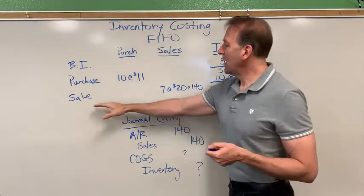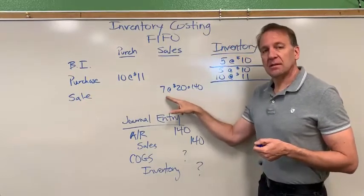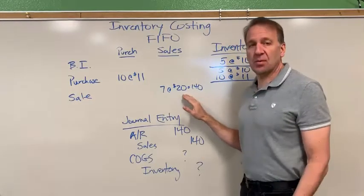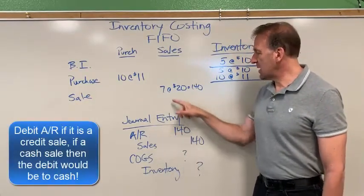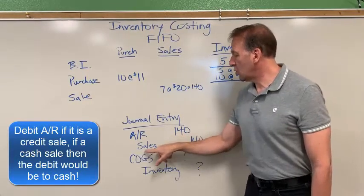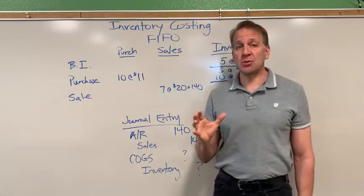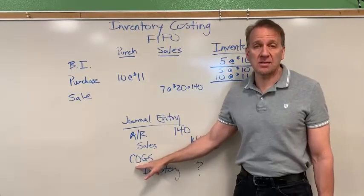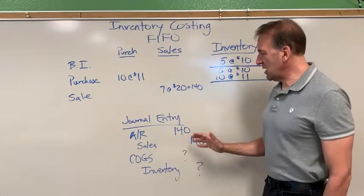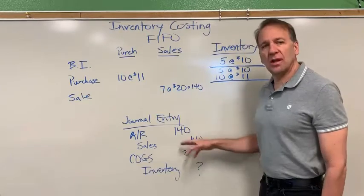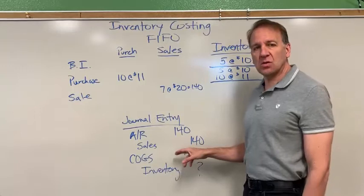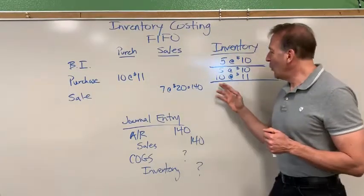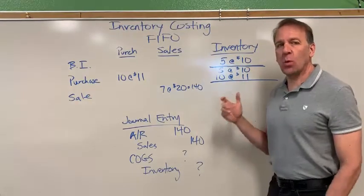Now I'm selling seven, and my sales price is $20. Recalling from journal entries we've done in the past, when we have a sale of a product, we need to debit accounts receivable — seven times $20 is $140 — and credit sales. We always have a double journal entry because we're selling soccer balls, so we have to take the cost out of inventory and put it into cost of goods sold. The question is: we're selling seven, so what dollar amount do I put in for cost of goods sold and credit inventory?